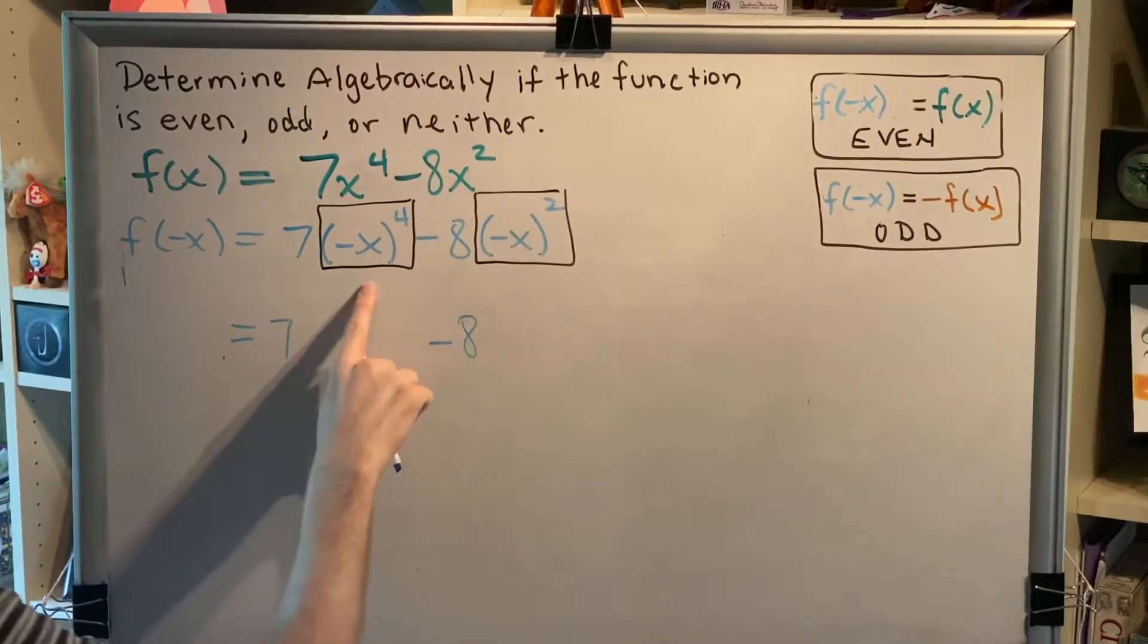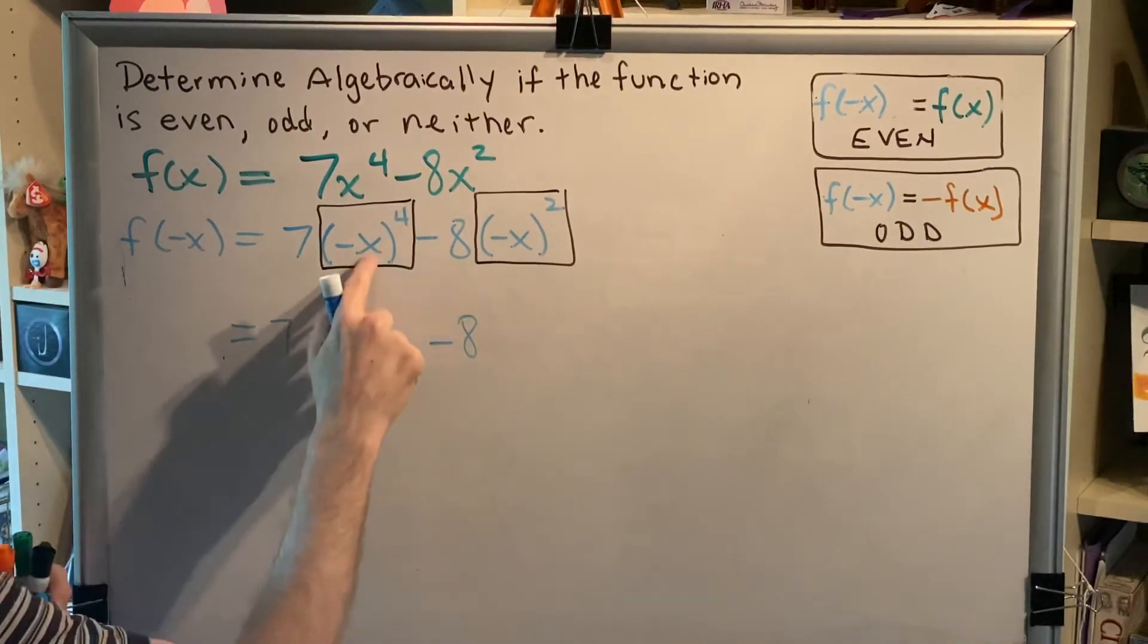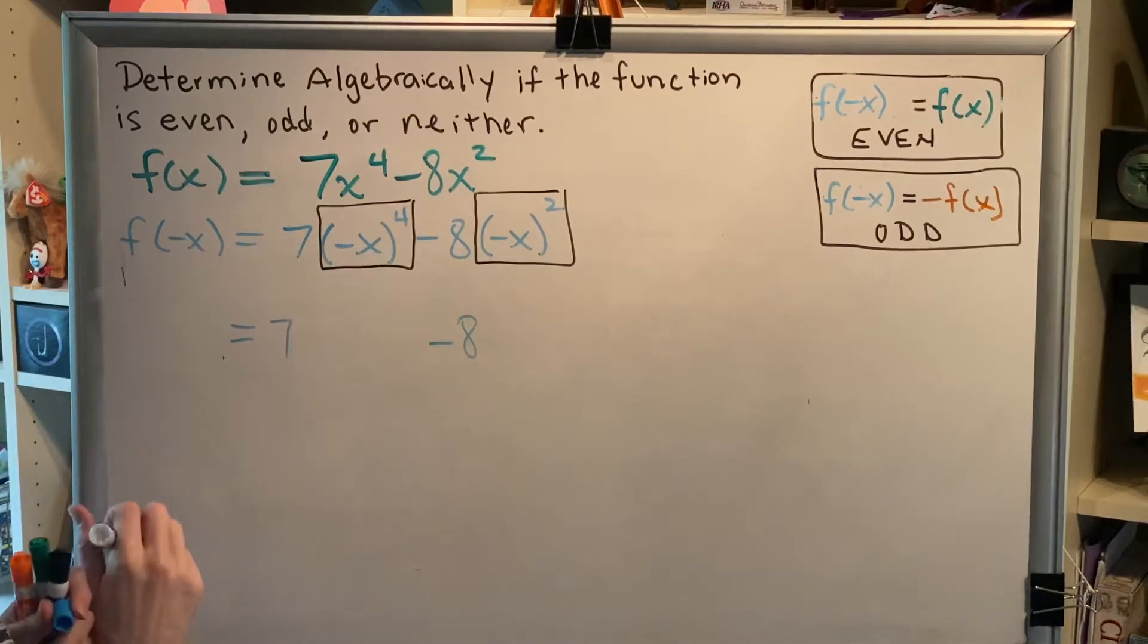Alright, in this box we have a negative raised to an even power, which is a positive. And we have x raised to the fourth power, so positive x to the fourth.